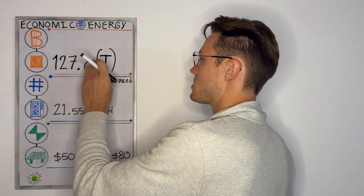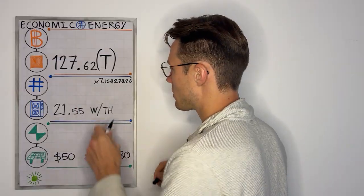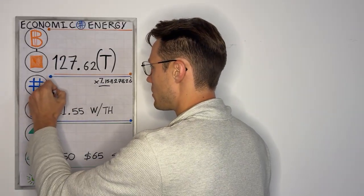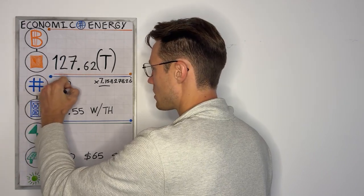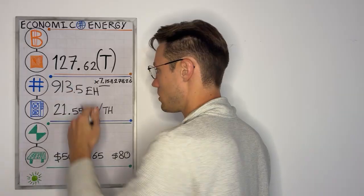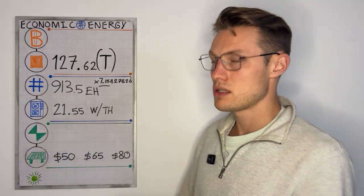So 127.62 multiplied by, we'll keep it short, 7.15 approximates out to about 913.5 exahash or 913 million terahash.